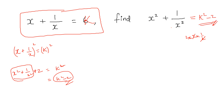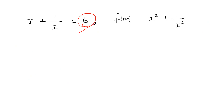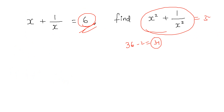We are doing a specific video covering these sums — including x cubed plus 1 by x cubed, x to the power 4 plus 1 by x to the power 4. Simply, k squared minus 2 is 6 squared minus 2. 6 squared is 36, minus 2 is 34. So x squared plus 1 by x squared equals 34.